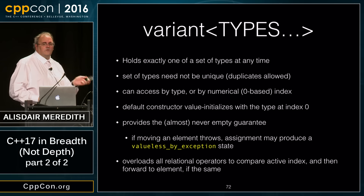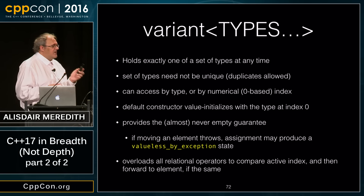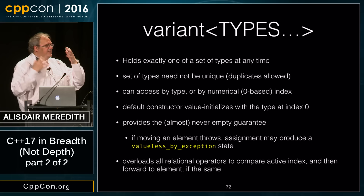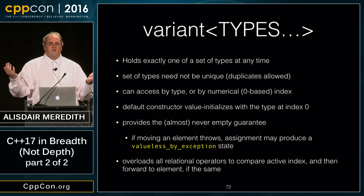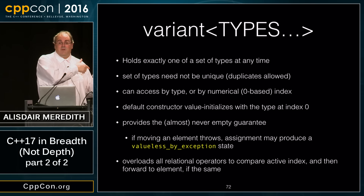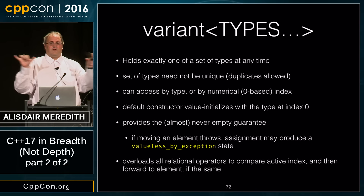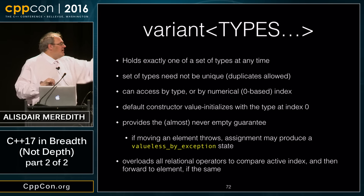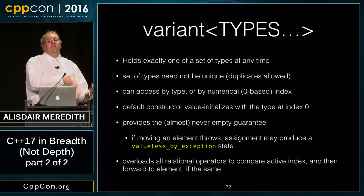Variant always holds a value — a key design question was whether it could have an empty state. Code is simpler if there's never an empty state, but maintaining a never-empty guarantee typically requires double buffering: if reassignment fails by throwing, you need the original value in a second buffer. That doubles the space overhead. Alternatively, allowing empty state means always querying it on top of all other states.